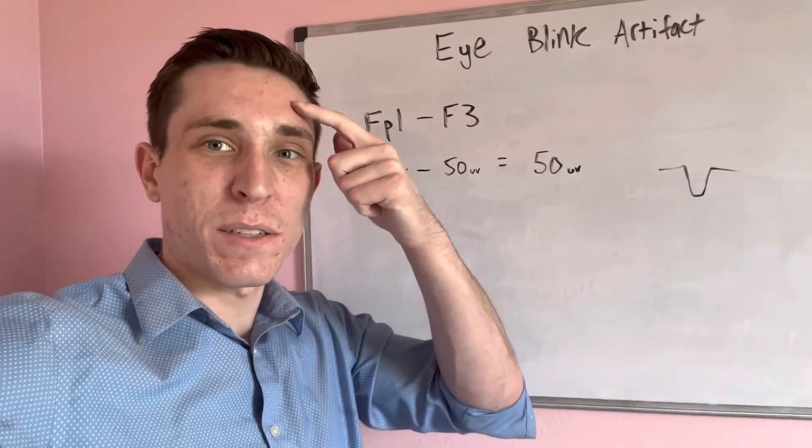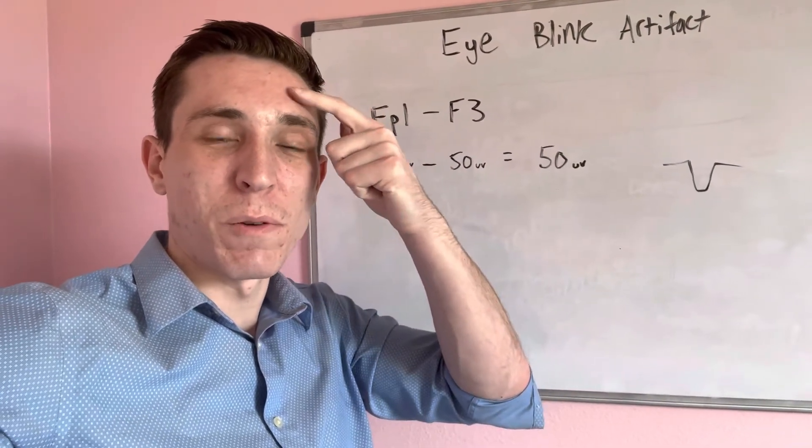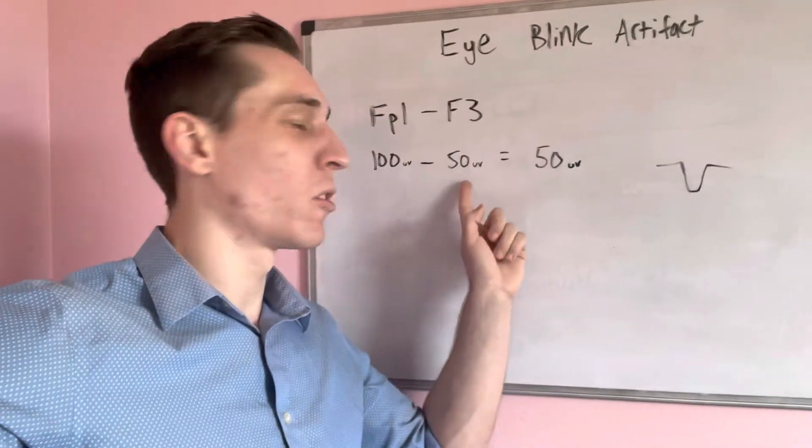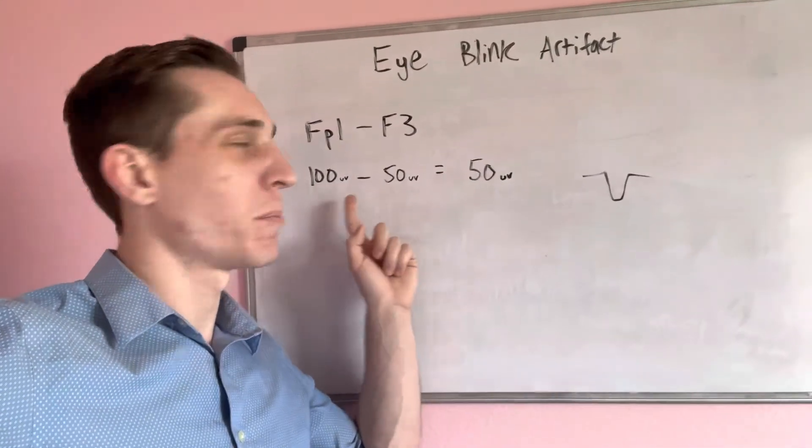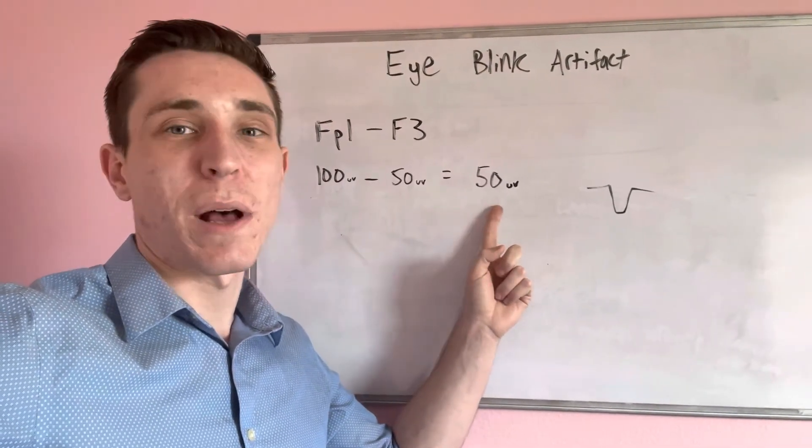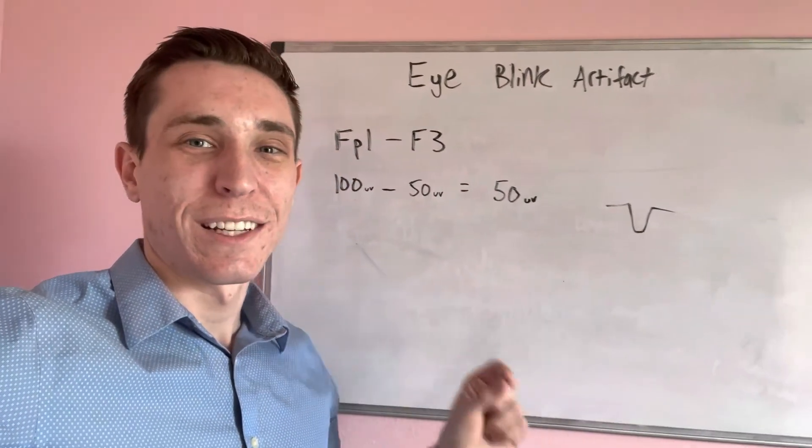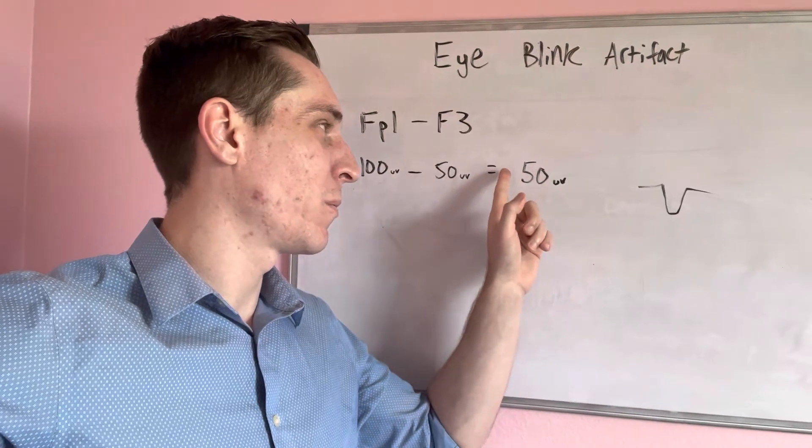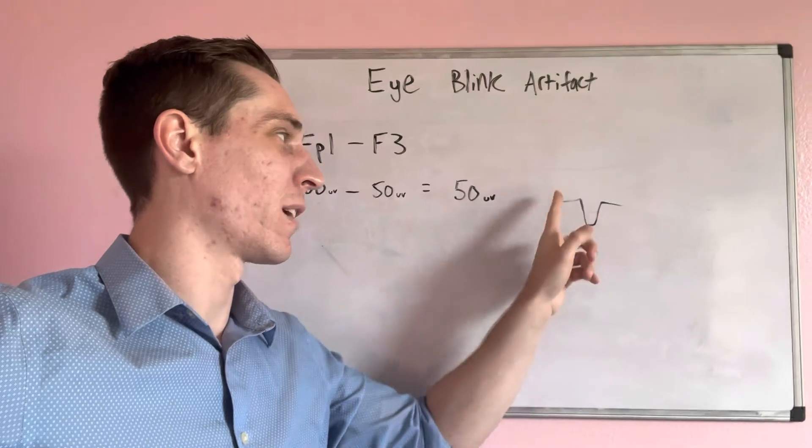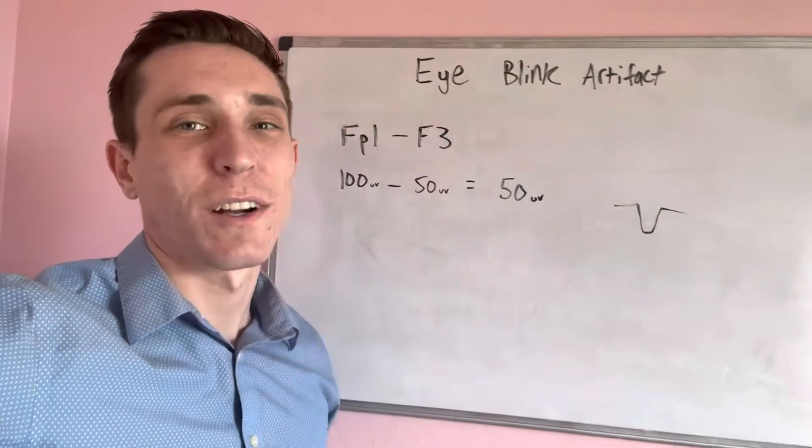It's going to be a little bit less because it's farther away. F3 is going to be farther away than FP1. FP1 picks up the most, the highest number. F3 picks up a little bit lower, 100 minus 50 gives you a positive number of 50 microvolts. And if you have a positive number on an EEG, that equals a downward deflection. If we had negative 50 microvolts, then it would be an upward deflection.